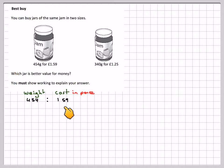So we've got 454 grams is 159 pence. If I work out what 1 gram is - now I don't have to take 1, it could be 10 if you wanted to.